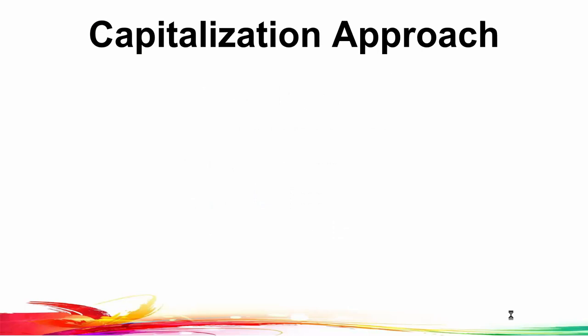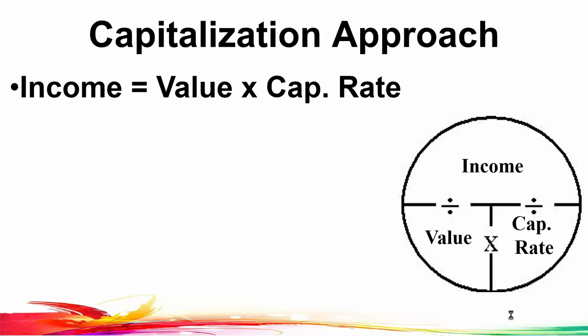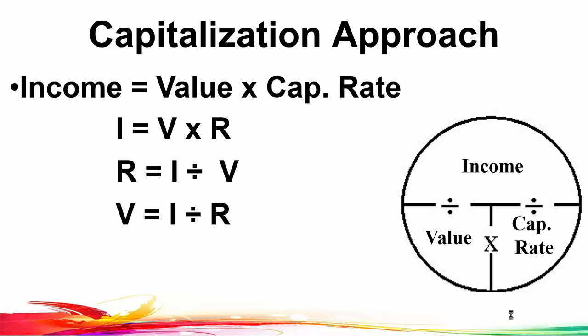We're also going to look at the capitalization approach. Since it uses a cap rate, we'll use the memory circle with the income — the small dollars on top — equal to the value, the large dollars on the bottom, times the capitalization rate. Income is equal to V times R. If we're looking for the rate, divide the income by the value. If we're looking for the value, divide the income by the rate.